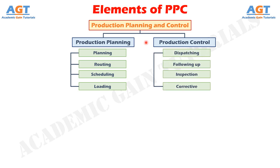If production planning is defective, production control is bound to be adversely affected. For achieving the production targets, production planning provides a sound basis for production control. One needs to remember that production plans are prepared in advance at